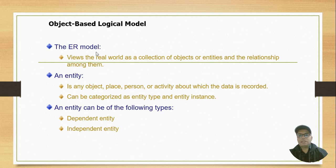The ER model views the real world as a collection of objects or entities and the relationships among them. An entity is also known as an object, and an object is known as an entity—both are the same.